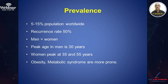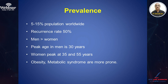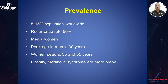Regarding the prevalence of stone disease worldwide, the prevalence is 5 to 15 percent. Recurrent rate of stone disease is up to 50 percent. Incidence is more in men than women, and the peak age in men for stone disease is 30 years. In women we see it at 35 and 55 years. The risk factors are obesity and metabolic syndrome.